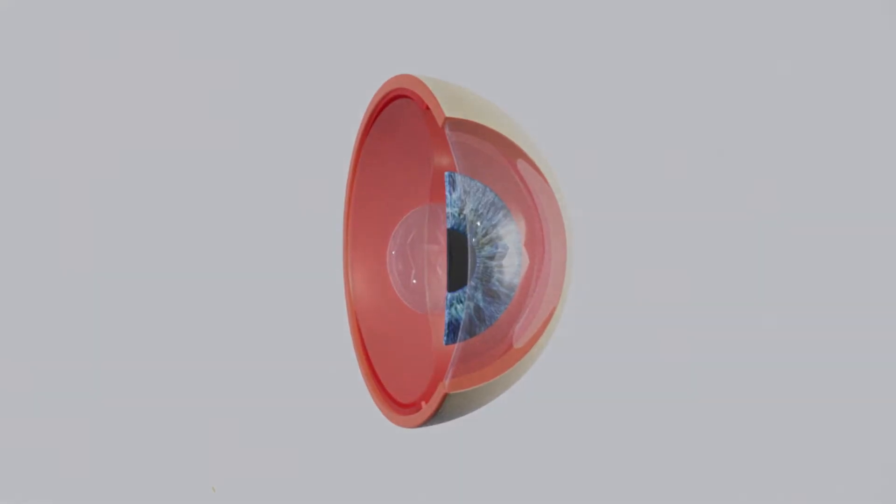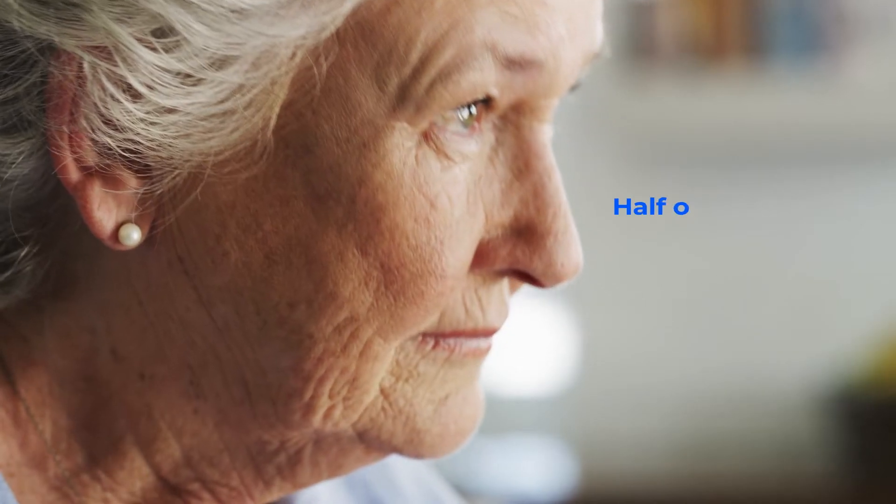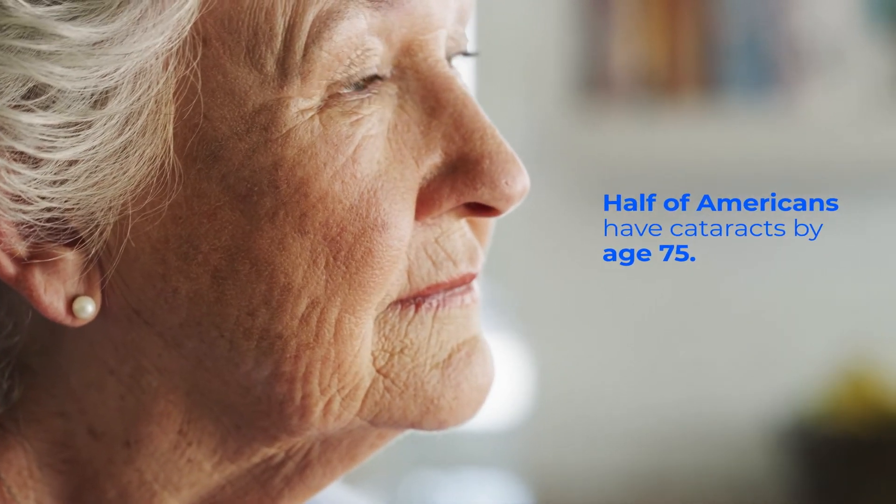Cataracts develop when the lens becomes thickened and opaque as we age, blurring our vision. About half of Americans have cataracts by the age of 75.